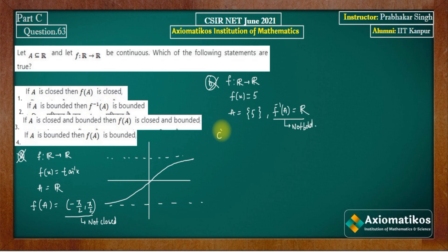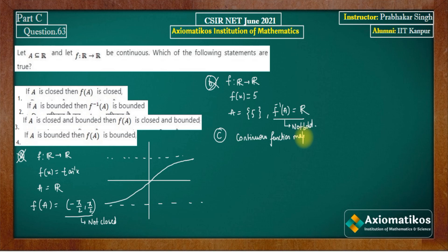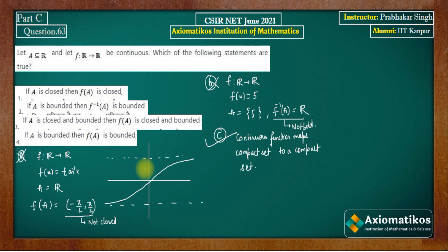Option C you know is a direct result. Closed and bounded in R is actually a compact set. We know that a continuous function maps a compact set to a compact set. So a continuous function always maps a compact set to a compact set. That is why part C is correct.